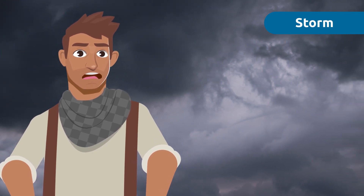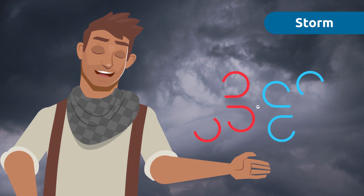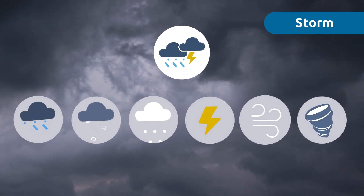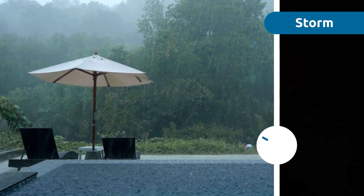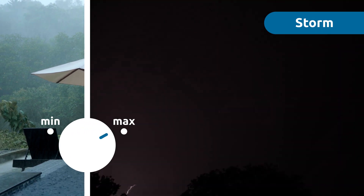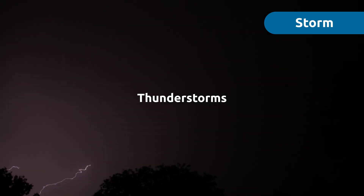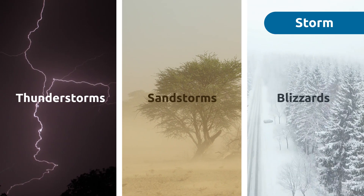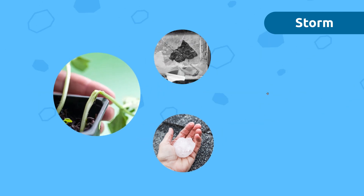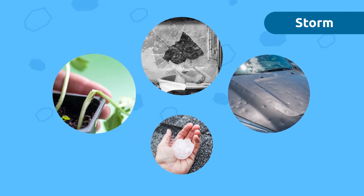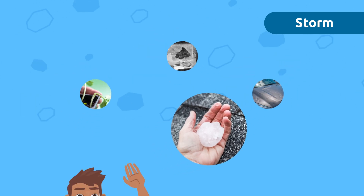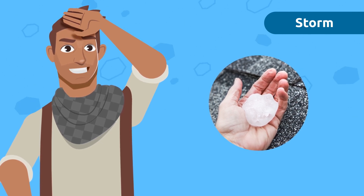A storm happens when two air masses of different temperatures and pressures collide, giving rise to phenomena such as rain, hail, snow, lightning, strong winds, or even tornadoes. Storms can have different intensities — sometimes very mild or very destructive. There are many types of storms, such as thunderstorms, sandstorms, or blizzards. There are times when storms produce hail, which are balls of ice that fall violently from the sky. Hail is very damaging to the environment — it destroys crops and can cause damage in cities like breaking windows or denting cars. Make sure to take cover when it hails, or you might end up with a bump on your head!